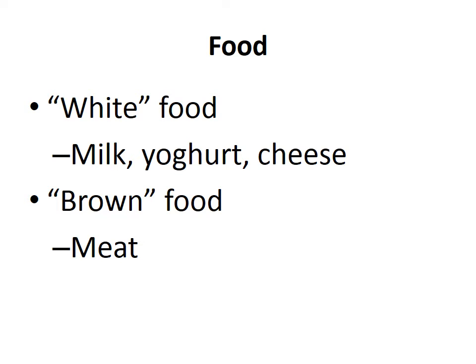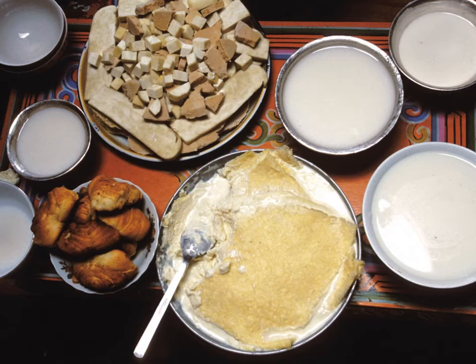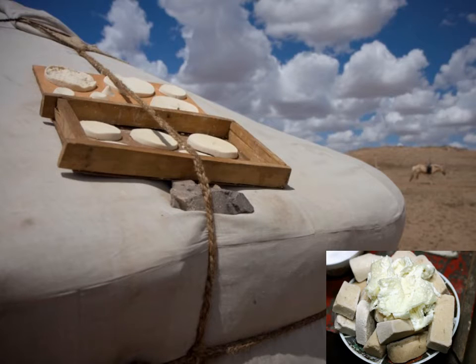Mongolians divide food into two sorts: white foods, which are dairy-based — milk, yogurts, cheeses — and brown foods, which are meat-based. Here is a selection of different custards, yogurts, and cheeses that you might find at a standard Mongolian banquet. Cheese can be dried on the roof of your gher into such a hard kind of cheese that you can crumble it into a powder and it will keep without refrigeration. Mongolians also enjoy soft cheeses, butters, and other dairy products of all sorts.